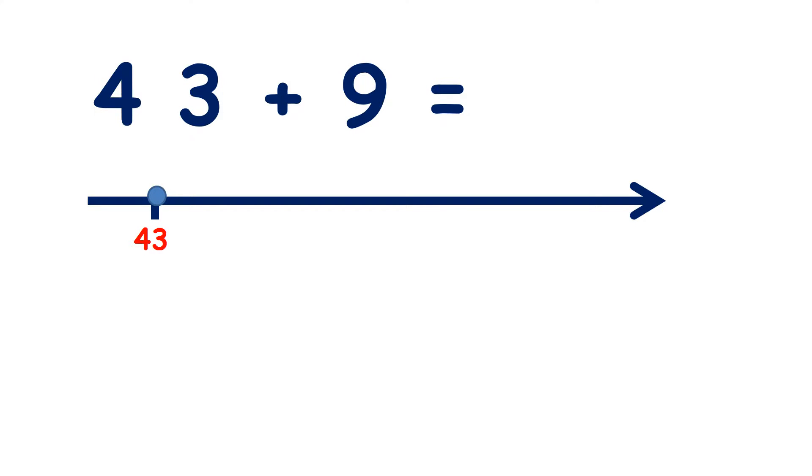We can add 9 very quickly if we remember that 9 is 1 less than 10. So we can add 10 to 43 very easily to get 53. But we've added 10 and we only want to add 9, so we've added one too many.